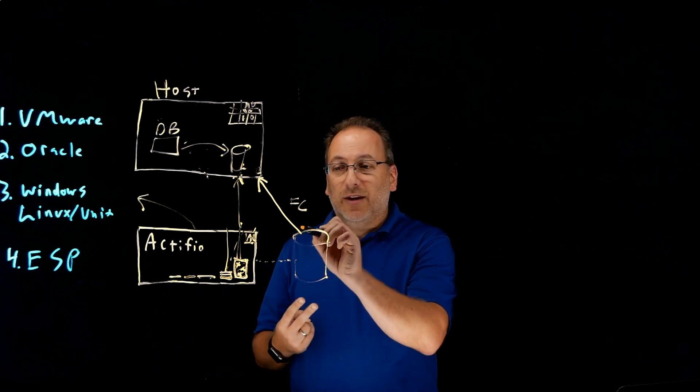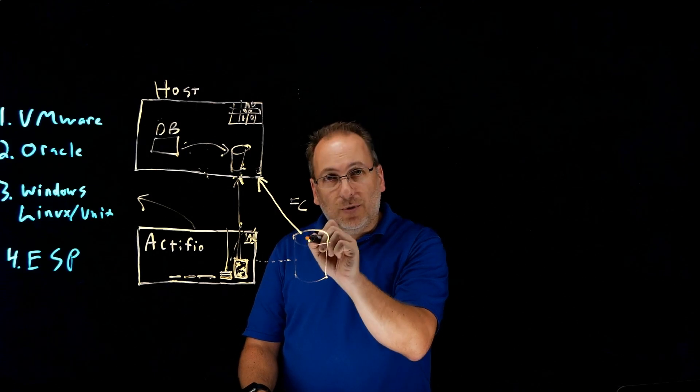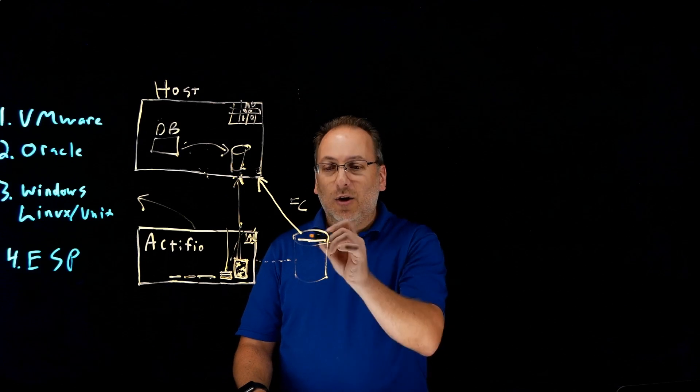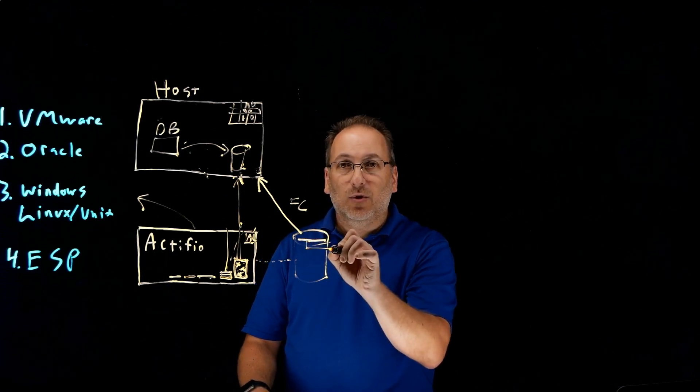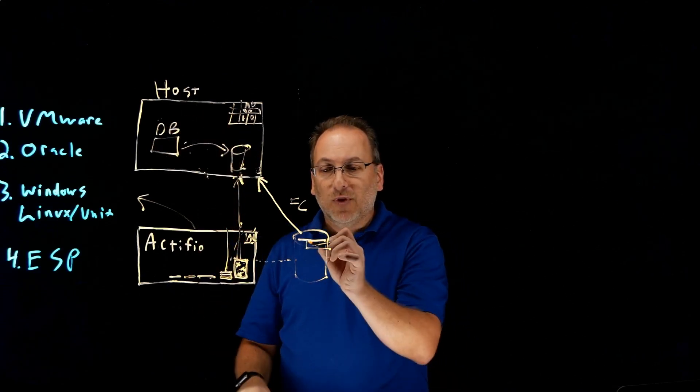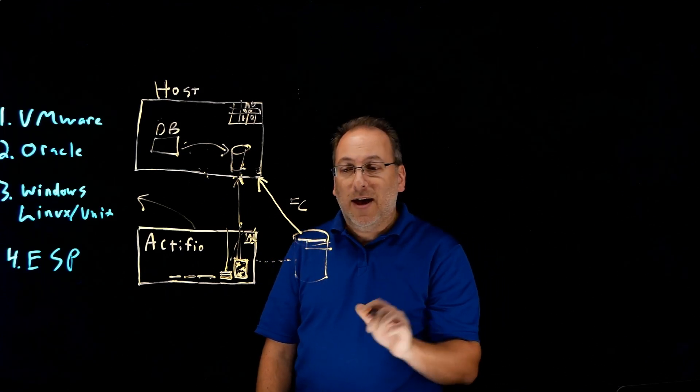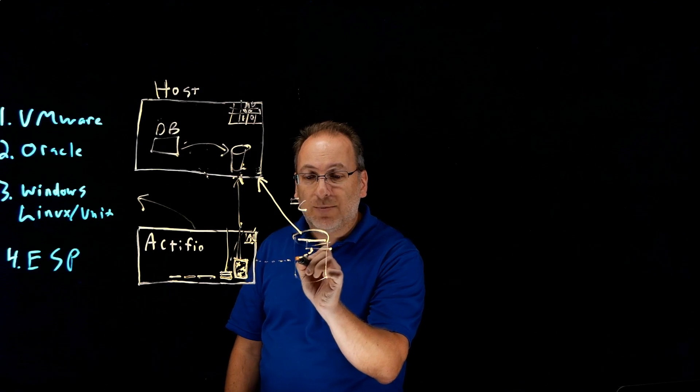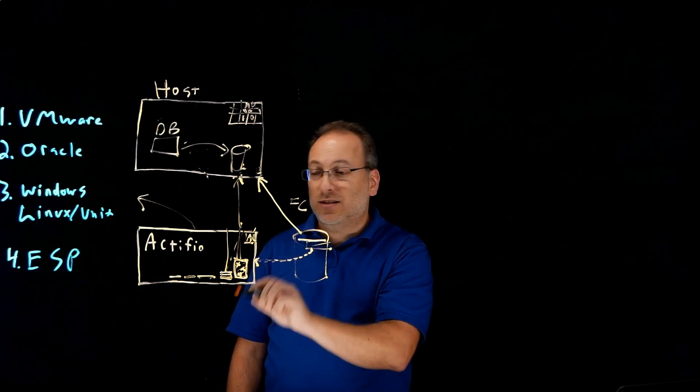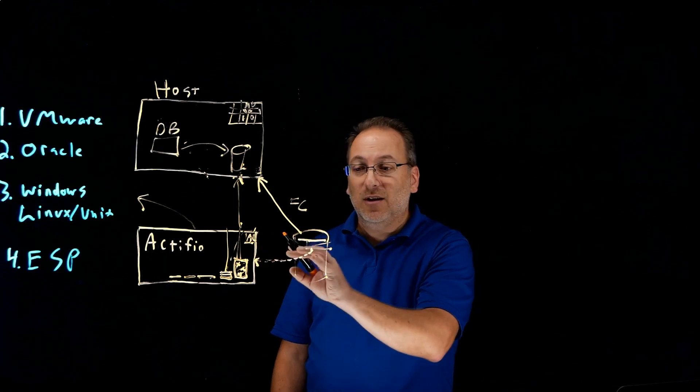The second architecture with external snapshot pools is, your production data might be on this storage array already. This is your production array. And in that scenario, you've got a production copy of the data. All we have to do is take a snapshot of it. We'll talk to the host, we'll quiesce the database, make sure it's app consistent. We'll take a snapshot on your production array. Now, everyone who knows me knows that I say snapshots are not backups. So what we'll then do is we'll take the snapshot, present it to the Actifio appliance, and the Actifio appliance can make a copy of it onto its own managed disks. It can replicate it, it can send it to object storage, it can do whatever you want so that you have a backup copy somewhere else.